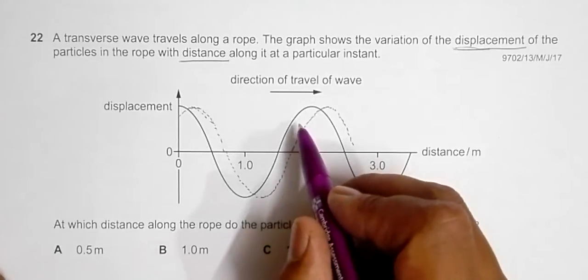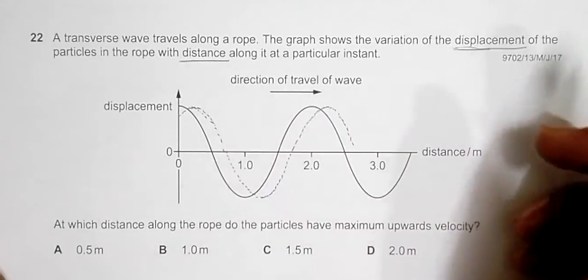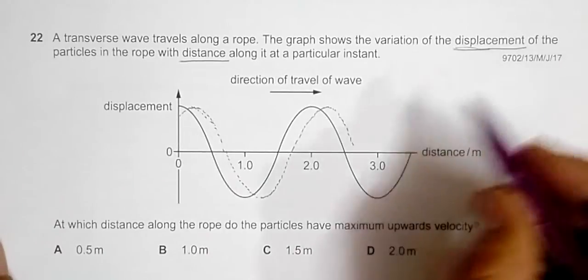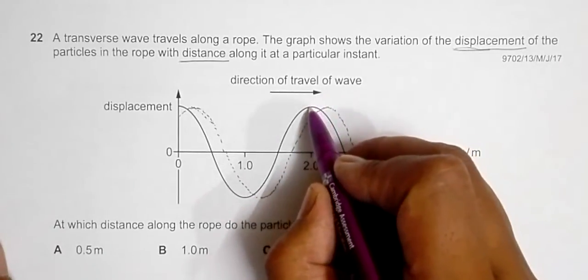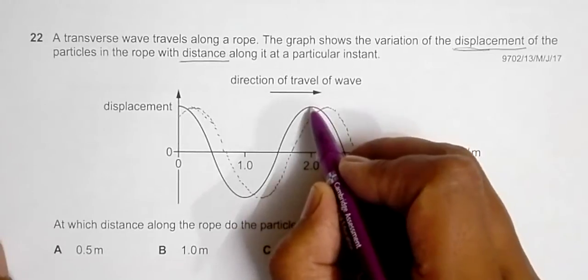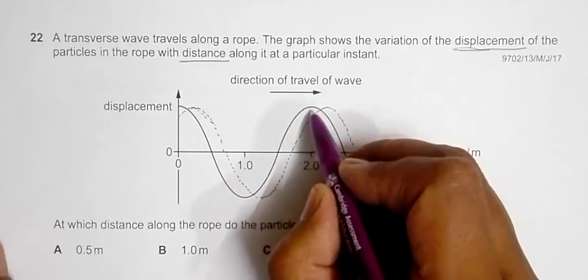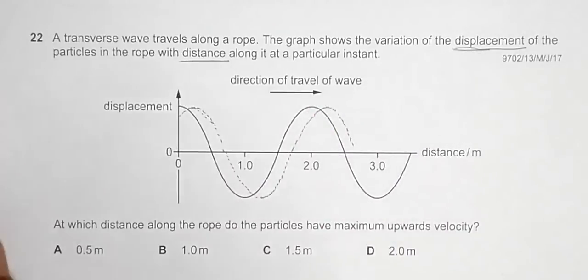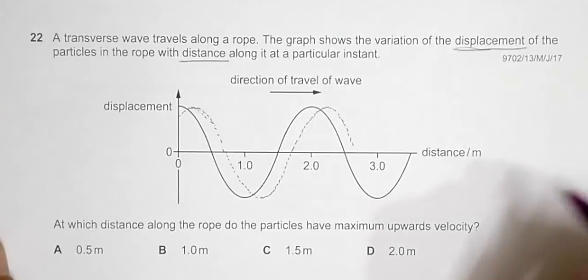So now if I look at the particle here, it is right now at rest, but later it has to go down. So here we have to find the particles which have the maximum upward velocity.